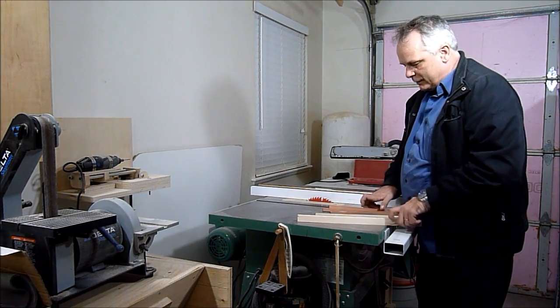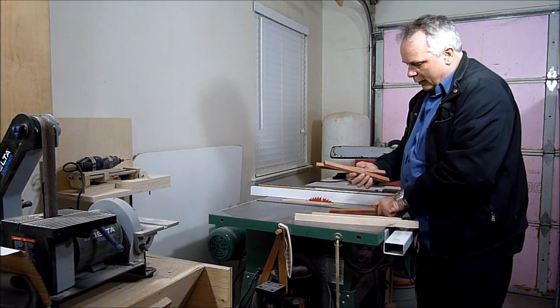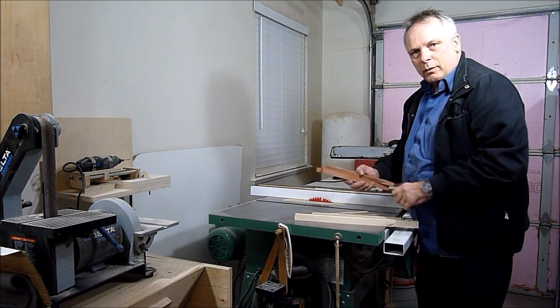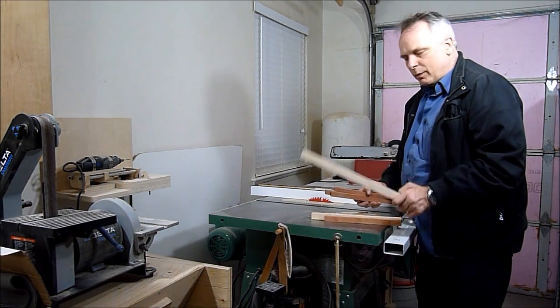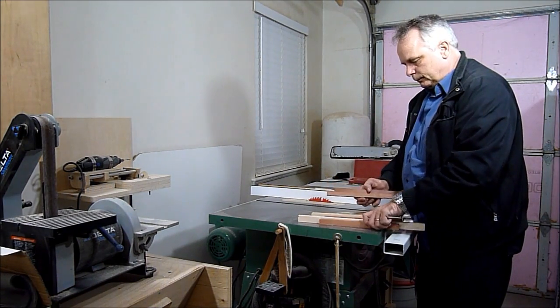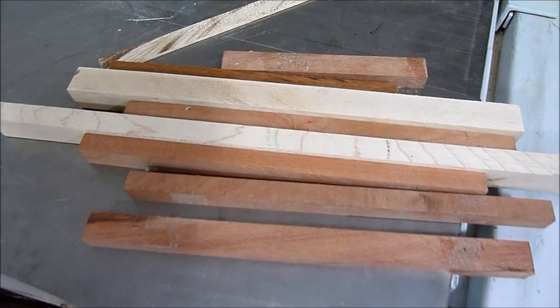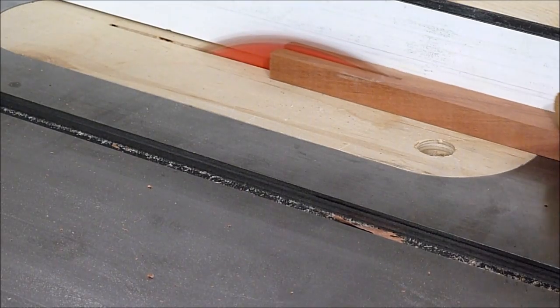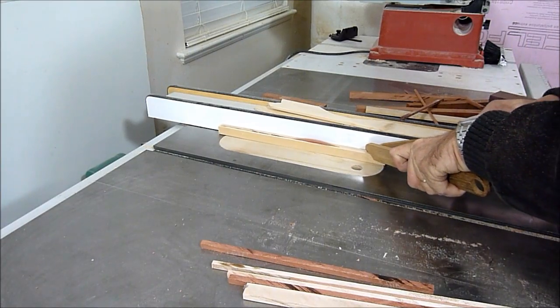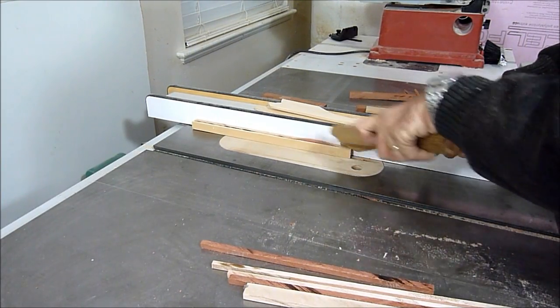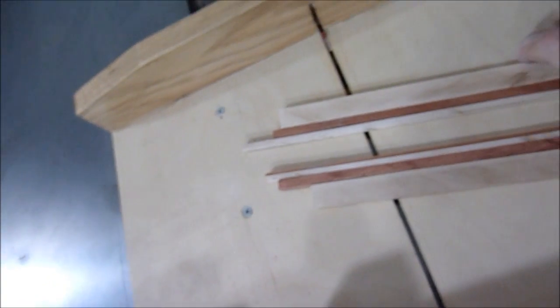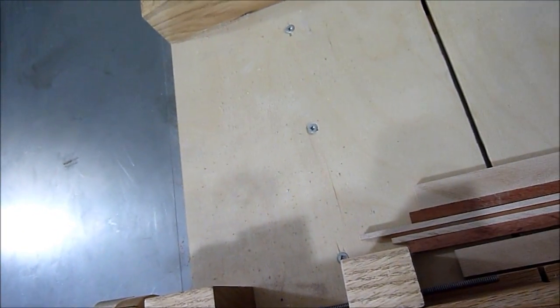To make the box I'll be using some hardwoods. I don't know what kind of wood this is, it's some hardwood. It's orange and I thought that would look good, and also some maple. The next thing to do is cut them all to the right length.